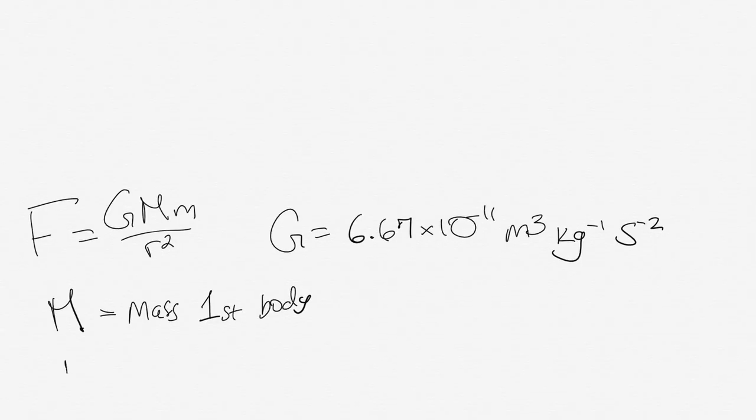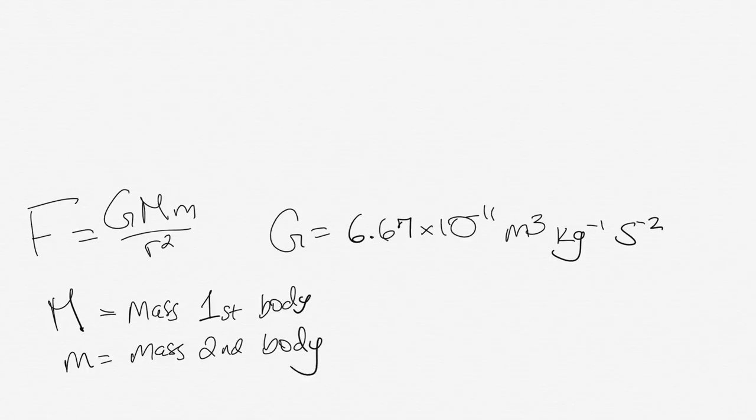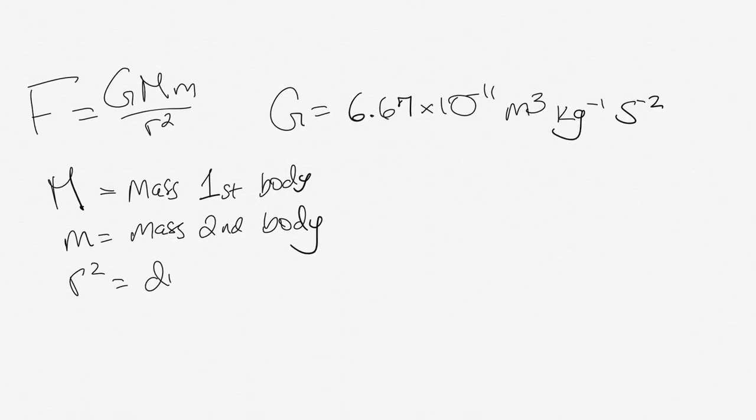We're going to multiply that by two bodies of mass. Big M is the first body of mass, and small m is the second body of mass. That's divided by r squared, which is the distance between the two bodies. This equation determines the force that acts on each body gravitationally.